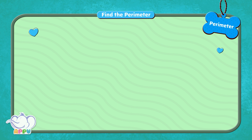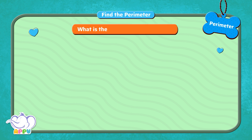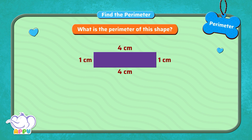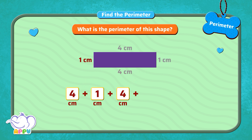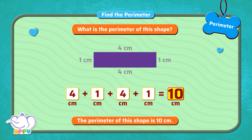Find the perimeter. What is the perimeter of this shape? To find the perimeter, we need to find the total length of the sides of the shape. So, we add the four sides. Four centimetres plus one centimetre plus four centimetres plus one centimetre, which is equal to ten centimetres. So, the perimeter of this shape is ten centimetres.